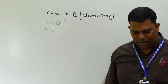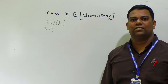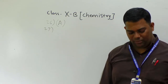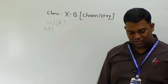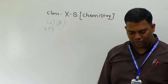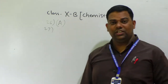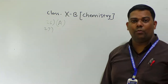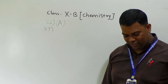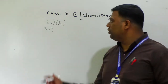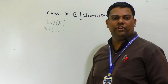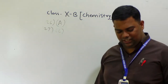Question number 27: the information that is not conveyed by a balanced chemical equation. Option A — they give physical state of reactant and product, yes that is given. Option B — relative amount of reactant and product, also correct. Option C — mechanism of the reaction. No, mechanism of the reaction is not conveyed by a balanced chemical equation. So question number 27 option is C.